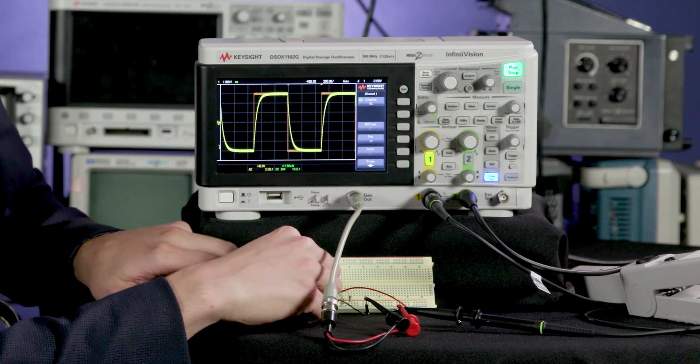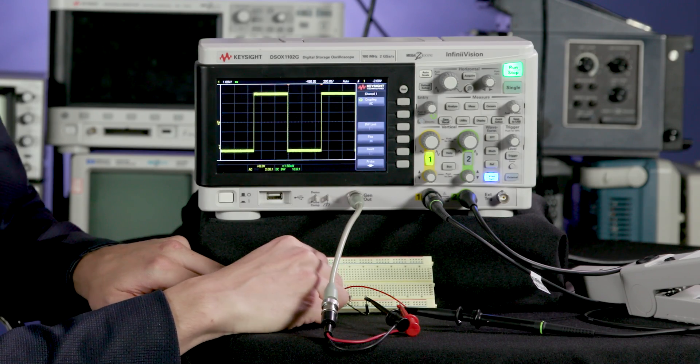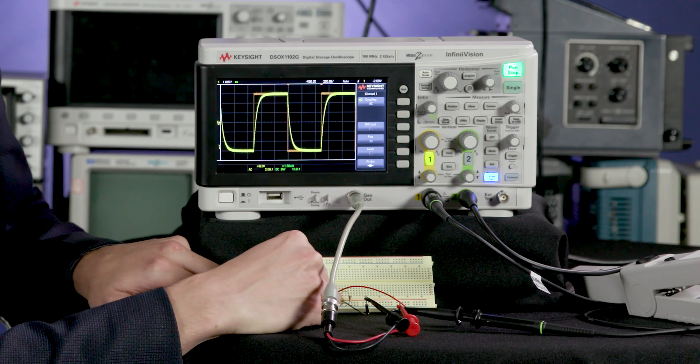Remember that a square wave is made up of an infinite number of increasing frequency sine waves. When I remove the capacitor we get a nice crisp edge, but when I add the capacitor we see that that edge gets a little rounder, and that's because the capacitor is filtering out the higher frequency components that make up that nice square wave.